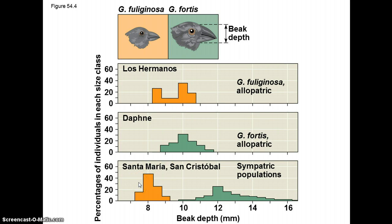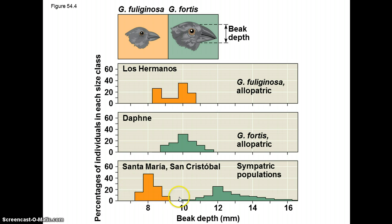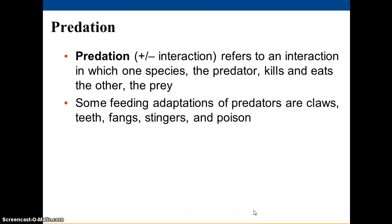What difference does beak size make? On these birds, it's very related to what they eat. Larger beaks tend to eat bigger seeds that need to be cracked open, while smaller beaks eat plants with smaller seeds. When they're allopatric, they probably eat similar things on different islands. But when they come together, they begin to specialize — one on smaller-seeded plants and one on larger-seeded plants — to avoid competition.